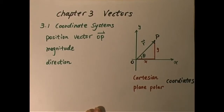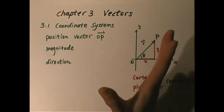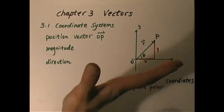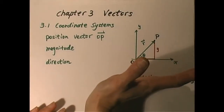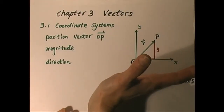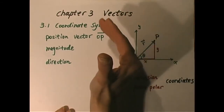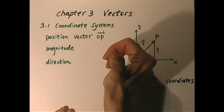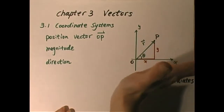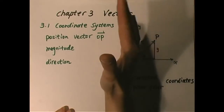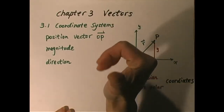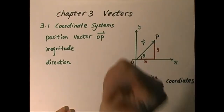How do we determine the z direction? Usually we will use our right hand — our four fingers for our x direction, and then go to y, and the thumb direction will be the z direction. So that is x, y, and z: the right-hand rule.